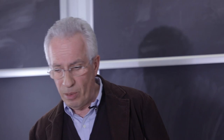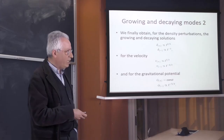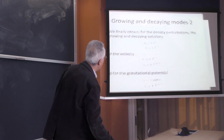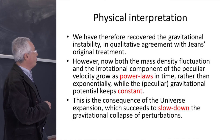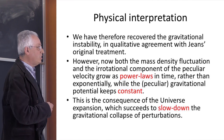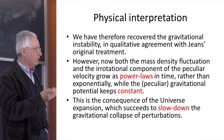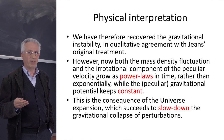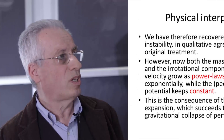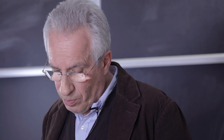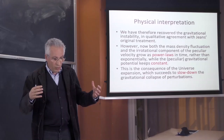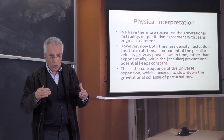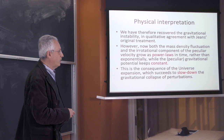This is the most important result of this discussion. We have recovered the gravitational instability phenomenon in qualitative agreement with the original Jeans treatment, but with an important difference: we no longer have exponential instability or exponential decay — we have power laws in time for the density and peculiar velocity, while the gravitational potential remains constant in its growing mode. This change from exponential to power-law growth is due to the expansion of the universe slowing down gravitational collapse, so the competition of these two effects gives a weaker power-law behavior.